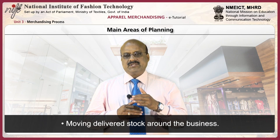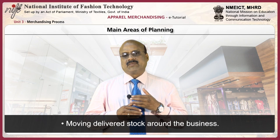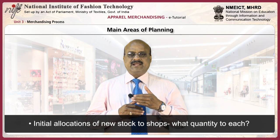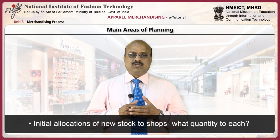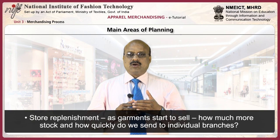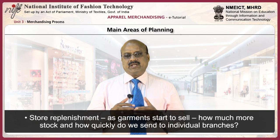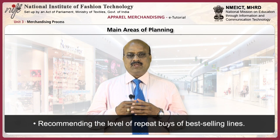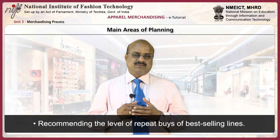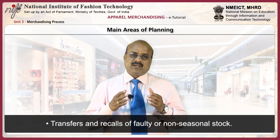Moving delivered stock around the business involves the following activities: initial allocation of new stock to shops, deciding what quantity for each shop, store replenishment as garments start to sell — how much more stock and how quickly it should be sent to individual branches, recommending the level of repeat buys of best selling lines, and transfers and recalls of faulty or non-seasonal stock.